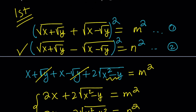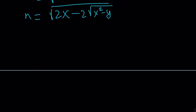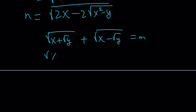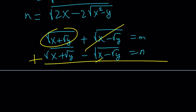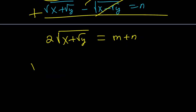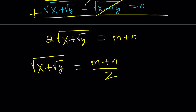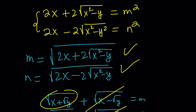Let's go back to the original system. We wrote the sum as m and the difference as n. If you add these two equations and divide by 2 you get the square root of x plus root y. These two cancel out and we get 2 times the square root of x plus root y equals m plus n. Therefore, the square root of x plus root y equals m plus n divided by 2.